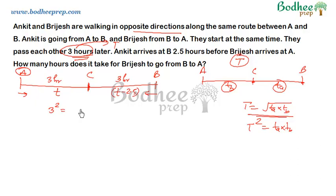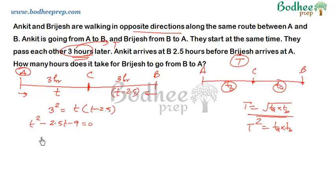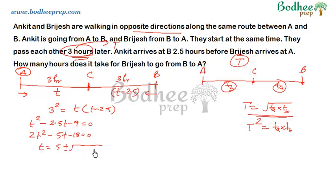So 9 equals T into (T minus 2.5). After opening the brackets we get T squared minus 2.5T minus 9 equals 0. Multiplying by 2, it becomes 2T squared minus 5T minus 18 equals 0. This is a quadratic equation. Solving for T: T equals [5 plus or minus square root of (5 squared minus 4 times 2 times negative 18)] divided by 2 times 2, that is divided by 4, which makes it plus 18.